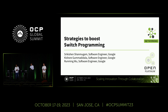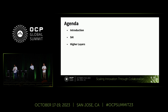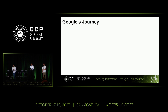We are going to talk about an express lane for high-speed route programming. Looking at the agenda: we'll start with an introduction on Google's journey in this space, where we started and why we ended up here. Sai Kishore will deep dive into one of the APIs where we had challenges, followed by Ranming looking at the higher layers and the bottlenecks with IPCs. We'll then share results and conclude with a call to action.